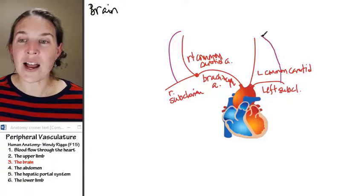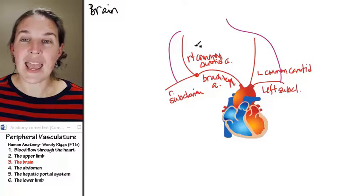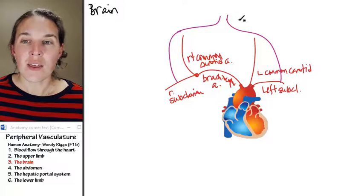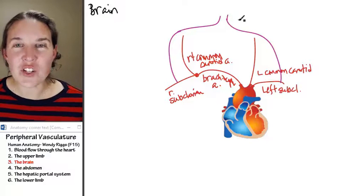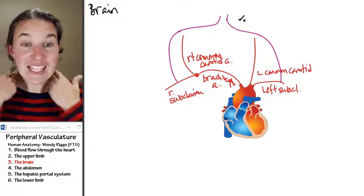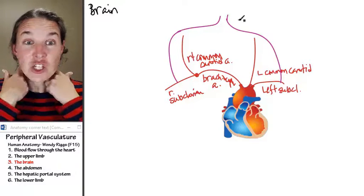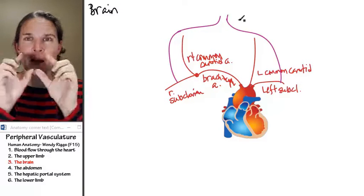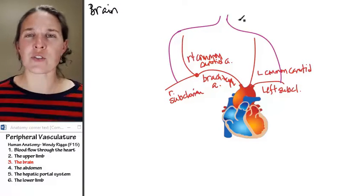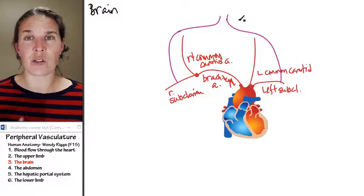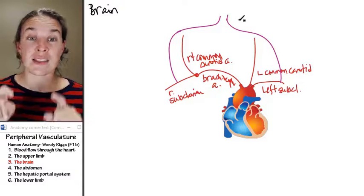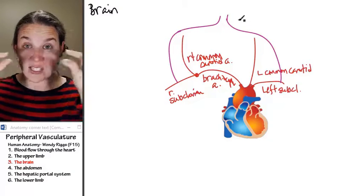It then travels forward, and these guys travel together up the transverse foramina in cervical vertebrae. Do you remember learning how you knew cervical vertebrae were cervical and not thoracic or lumbar? They had those little holes in the transverse processes.